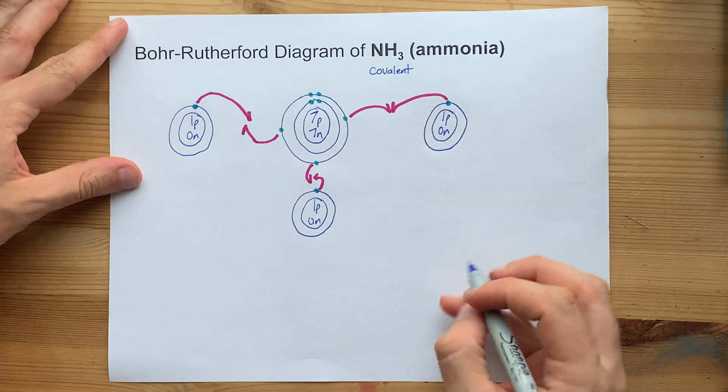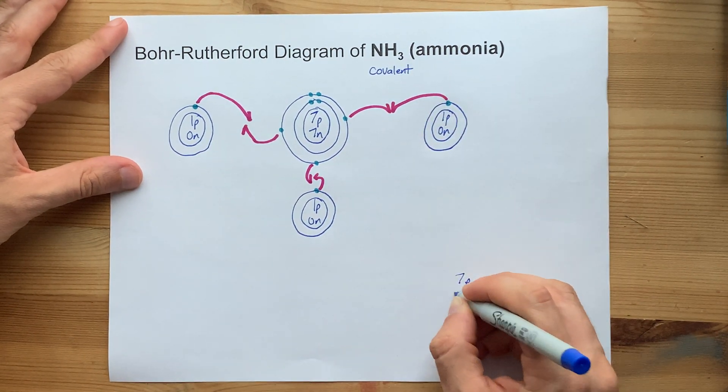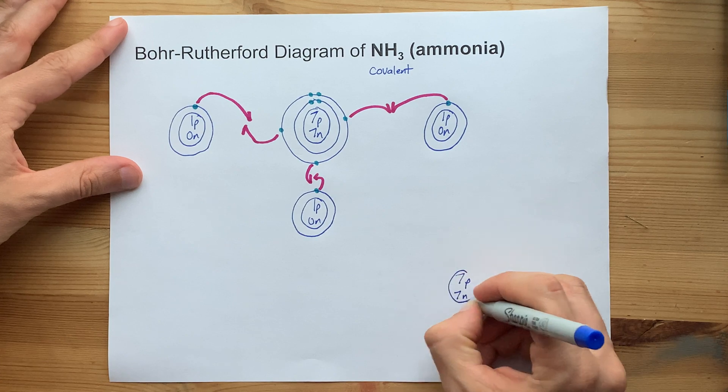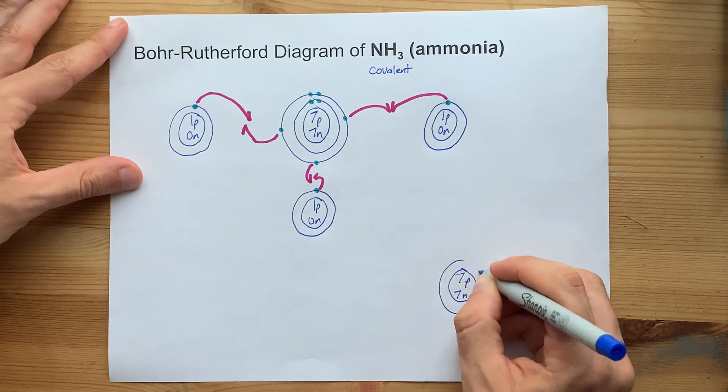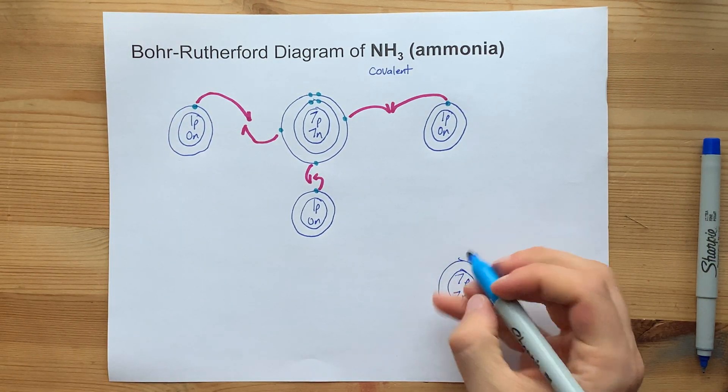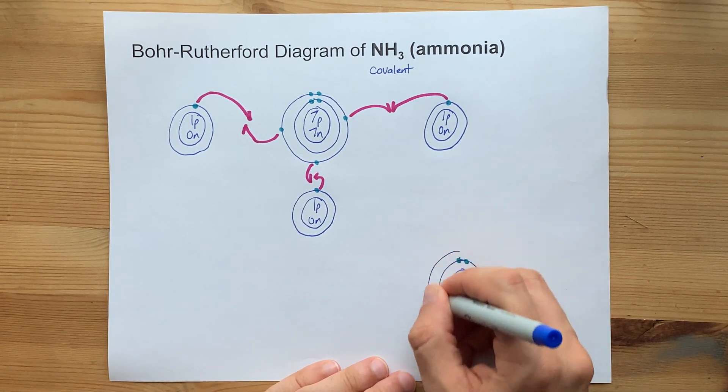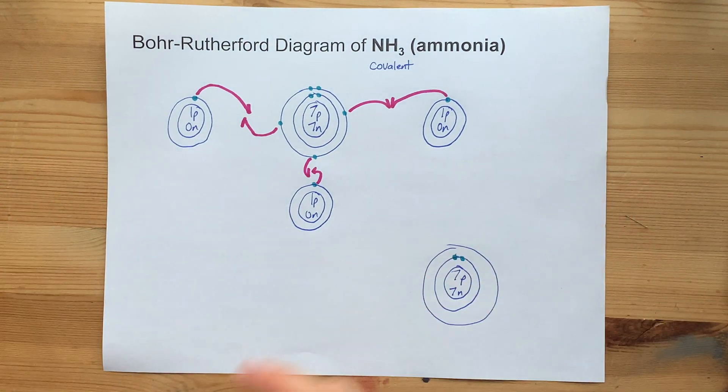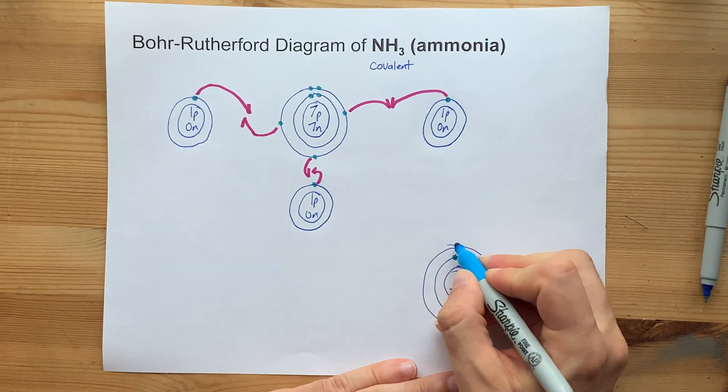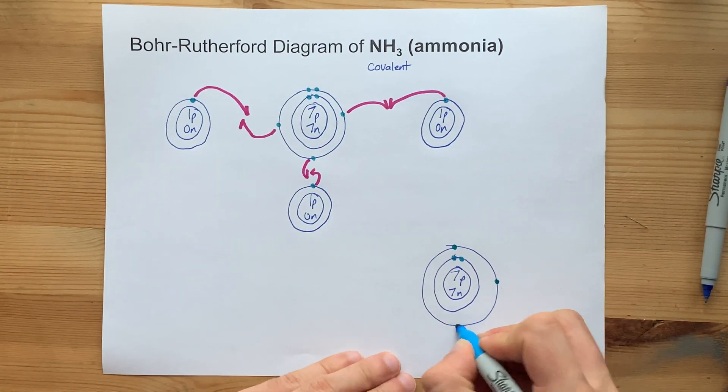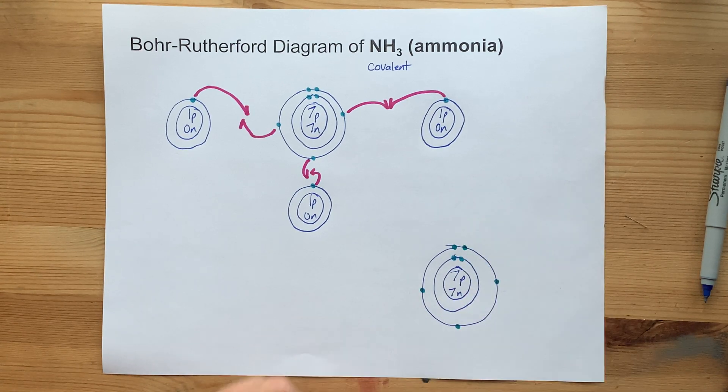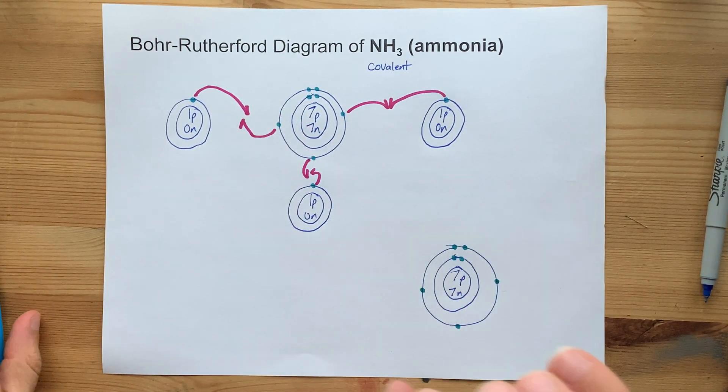So, NH3. We're going to draw that nitrogen for ourselves again. Seven protons, seven neutrons in a nucleus, two electrons in the first shell that are not involved in the bonding, and five electrons here to get seven total. One, two, three, four, five. That's the same nitrogen that we always had.